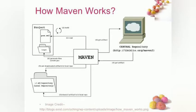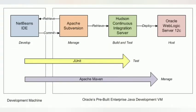3. Build lifecycles, phases and goals. A build lifecycle consists of a sequence of build phases, and each build phase consists of a sequence of goals. A Maven command is the name of a build lifecycle, phase or goal. If a lifecycle is requested to be executed by giving a Maven command, all build phases in that lifecycle are executed also. If a build phase is requested to be executed, all build phases before it in the defined sequence are executed too.